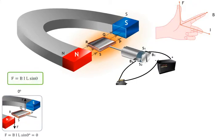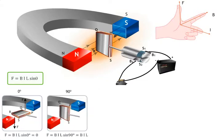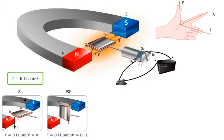The coil begins to rotate until its plane becomes vertical, i.e., perpendicular to the direction of the magnetic field. The magnetic fields of the coil and the magnets become parallel to each other as the coil rotates by 90 degrees and the couple acting on the coil becomes zero. However, the coil rotates further through 180 degrees due to inertia.